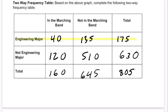We want to know what the probability is that they're in marching band. It's going to be based on this row. We know they're an engineering major, and we know 40 of them are in marching band. So it's going to be 40 out of all the engineering majors — not out of the total — it's out of 175.